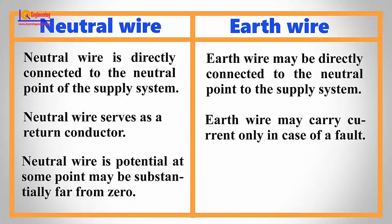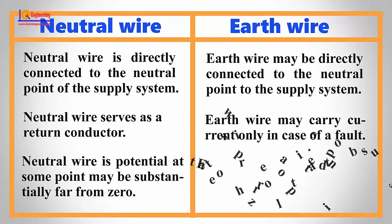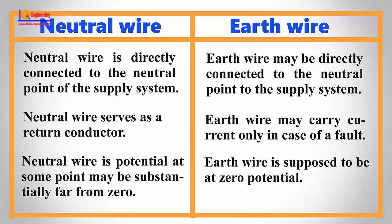Neutral wire potential at some point may be substantially far from zero. Earth wire is supposed to be at zero potential.